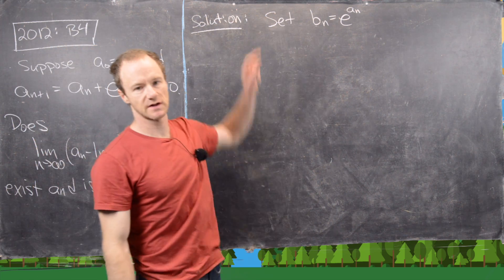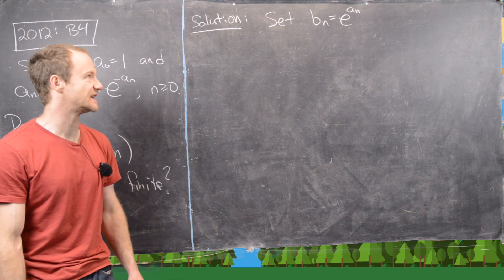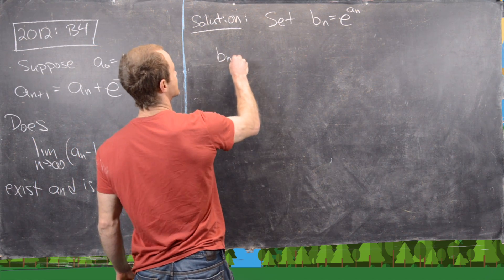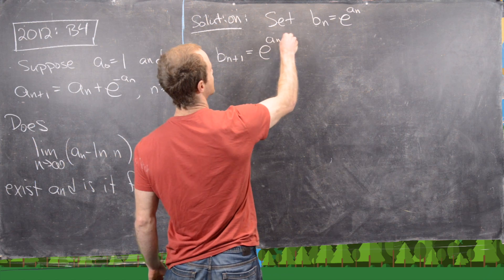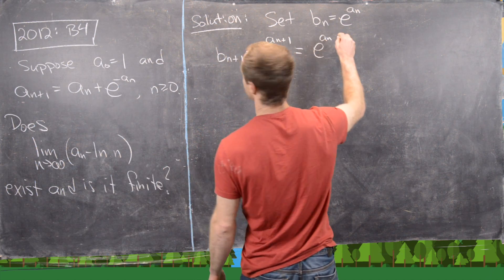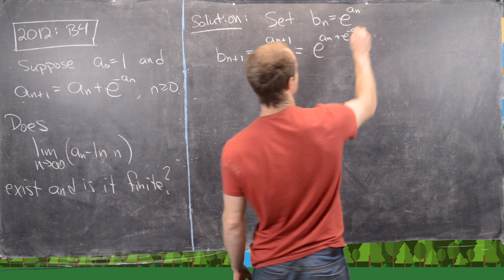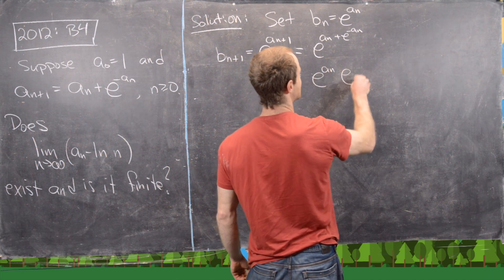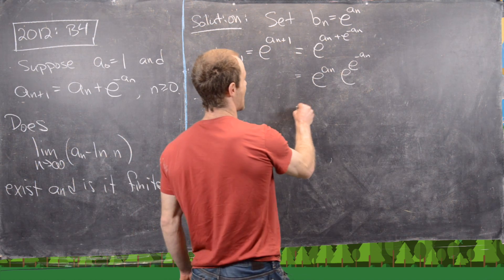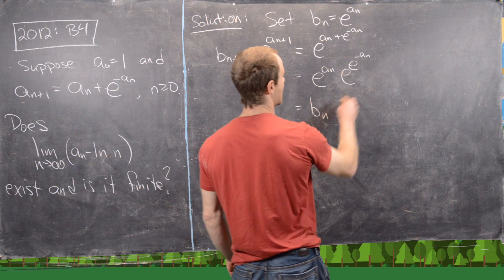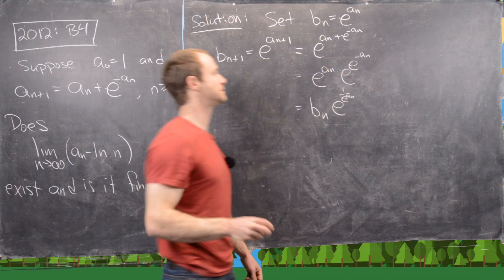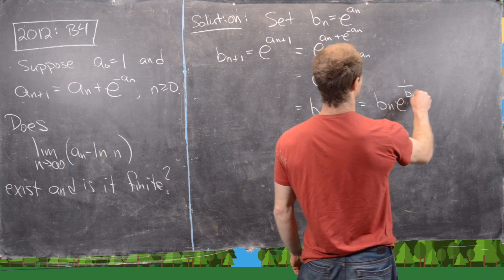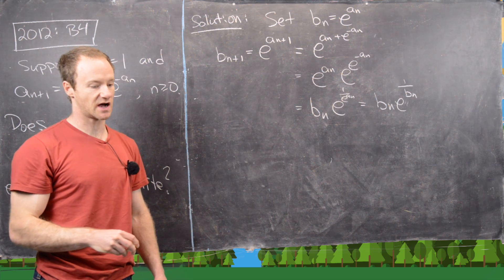Now let's look at the solution. We set b_n = e^{a_n}. Let's see what that does to our recursion. Notice b_{n+1} = e^{a_{n+1}} = e^{a_n + e^{-a_n}}, and factoring that out gives e^{a_n} · e^{e^{-a_n}}, which equals b_n · e^{1/e^{a_n}} = b_n · e^{1/b_n}. There we have our companion recursion, which was also part of the hint.